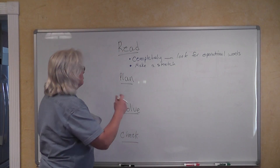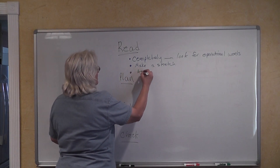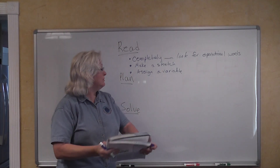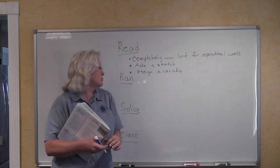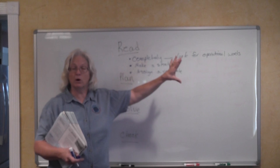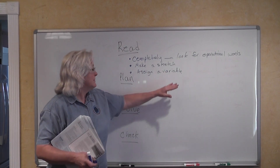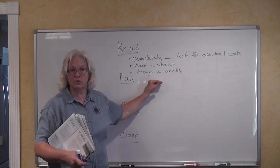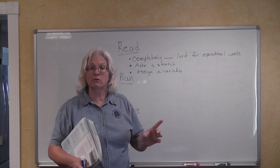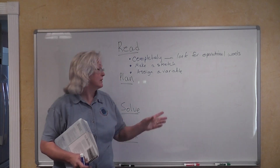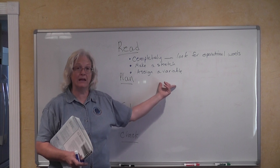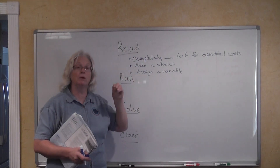As you're reading it, you're going to have to assign a variable for what you're looking for. You've read your problem completely, you've looked for the operational words, you've said is there a sketch I can draw. Then you say, okay, x is going to be the width of the garden. And since I have to have an expression for the length of the garden, I'm going to have that length be in terms of that variable also — the width plus 5. If the problem said the length is 5 feet longer than the width, then x plus 5 would be the length.